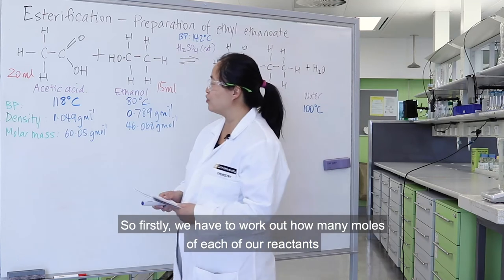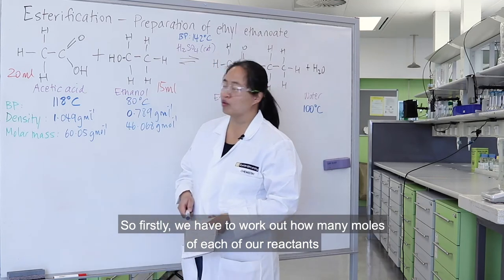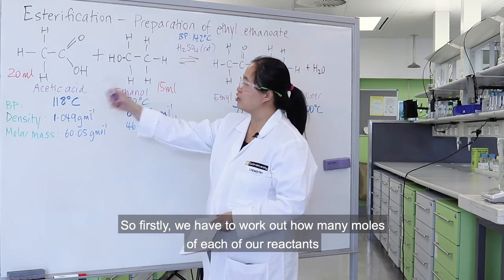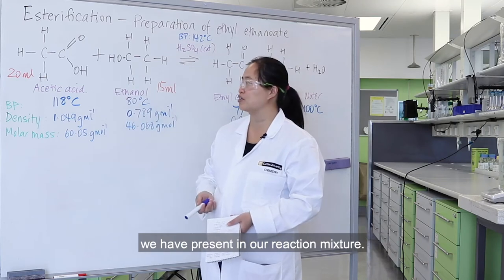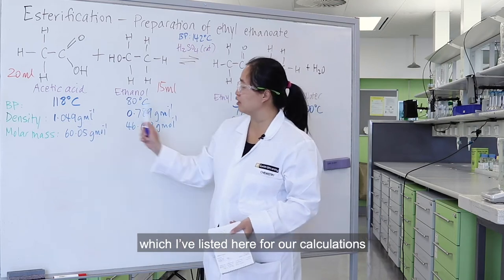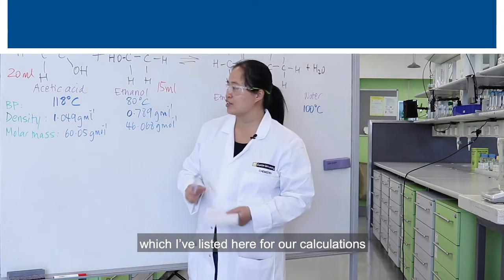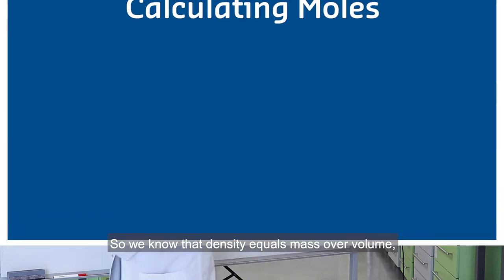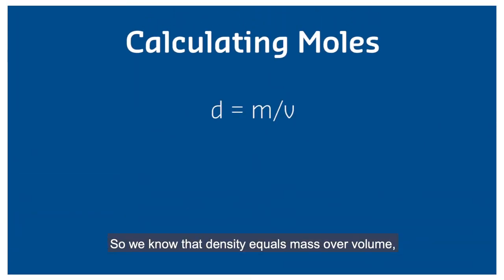Firstly, we have to work out how many moles of each of our reactants we have present in our reaction mixture. To do that, we need to know the densities, which I've listed here for our calculations. We know that density equals mass over volume. To work out our moles, we need to work out the mass of what we've used. If we rearrange this equation, we have mass equals density times volume.